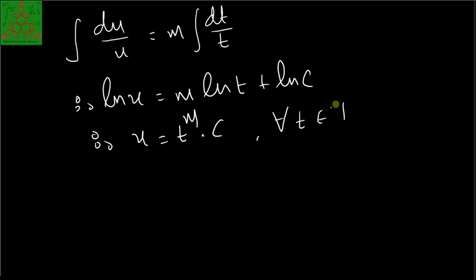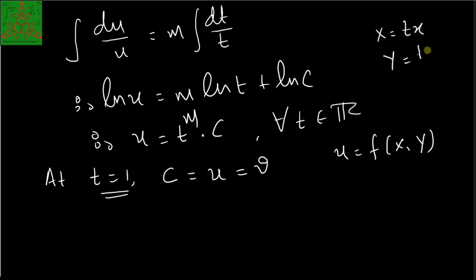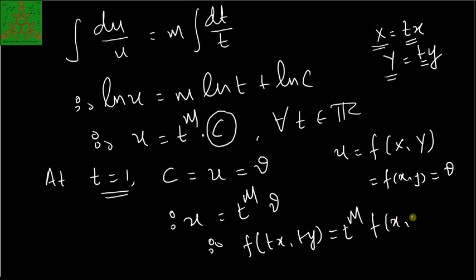Integrating both sides: ln(u) = m·ln(t) + ln(c), giving u = c·t^m. This holds for all t. At t = 1, u = f(x, y), so c = f(x, y). Therefore u = t^m·f(x, y), meaning f(tx, ty) = t^m·f(x, y). This completes the proof that f is homogeneous of degree m.